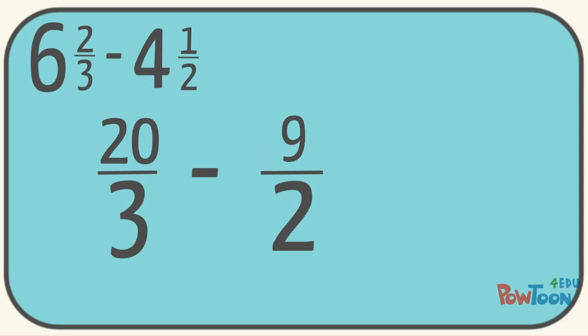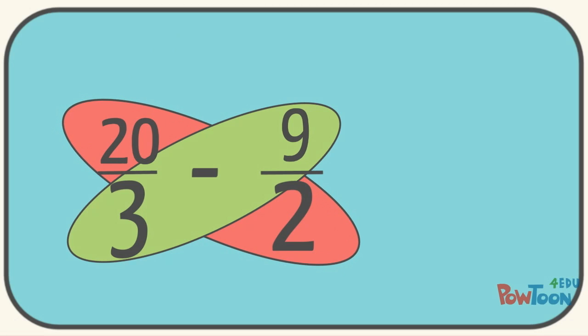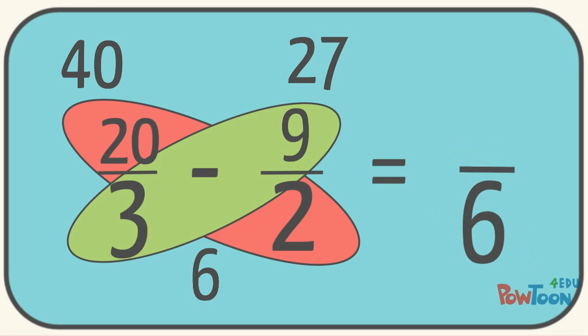Now we have it set up. We have 20 thirds minus 9 halves. We'll set up our cross multiplication method and we'll multiply the denominators to give us 6. Then we take 2 times 20 is 40 and 3 times 9 is 27. Now we simply subtract. 40 minus 27 is 13 and we keep our denominator the same.